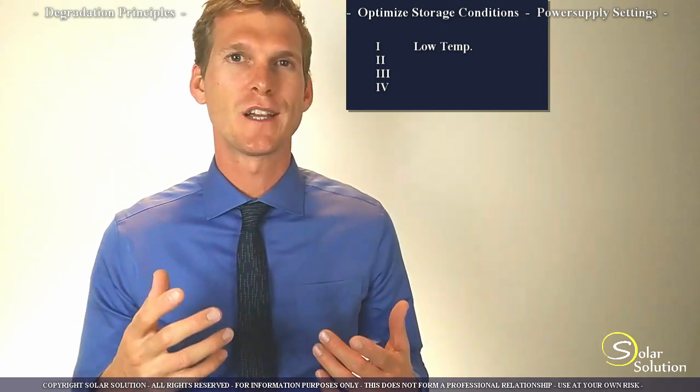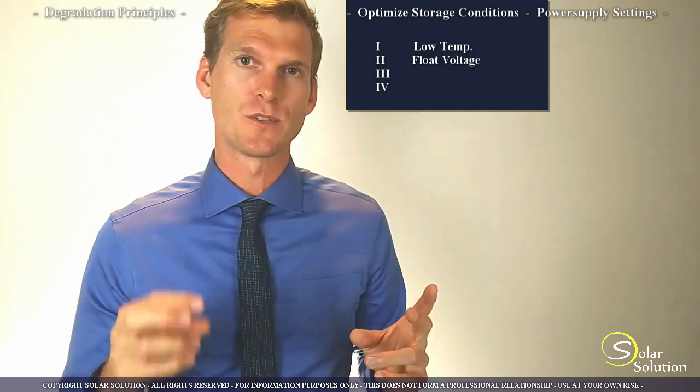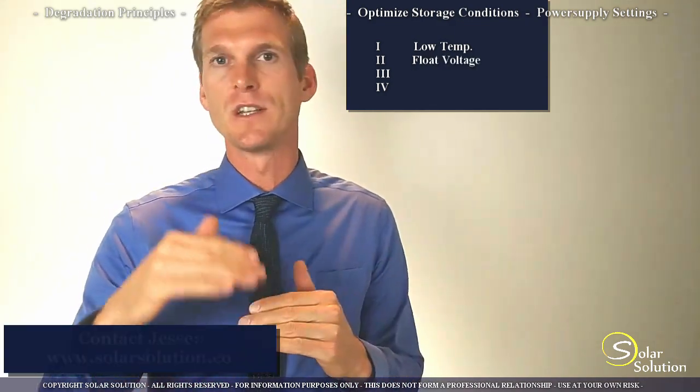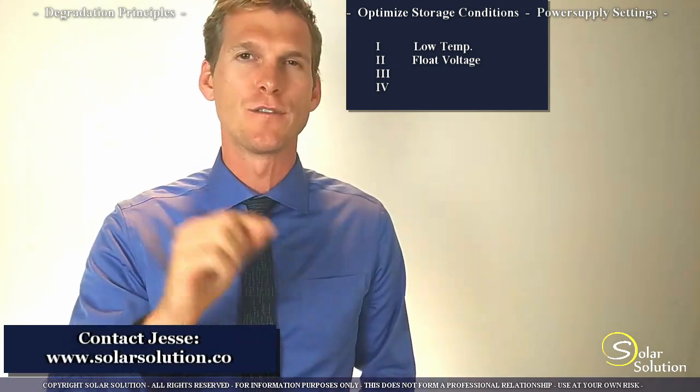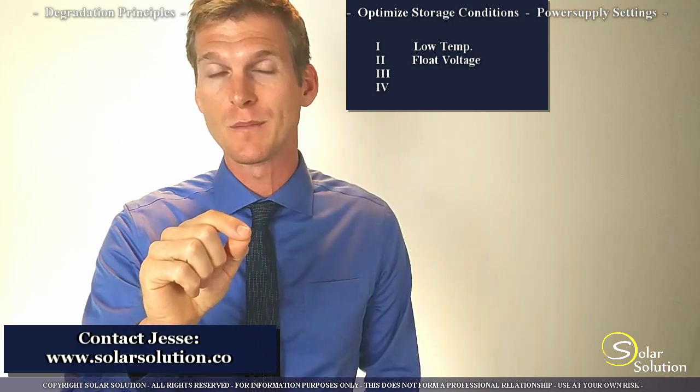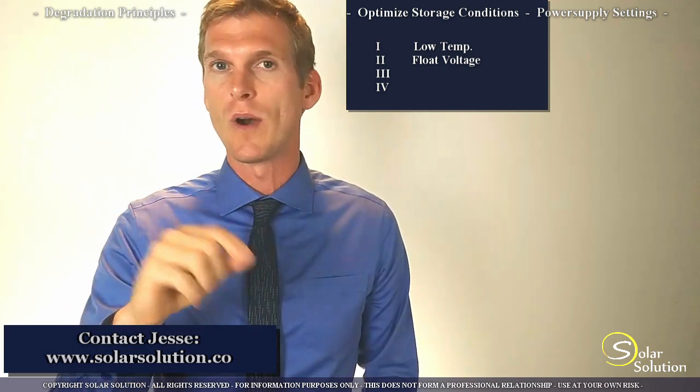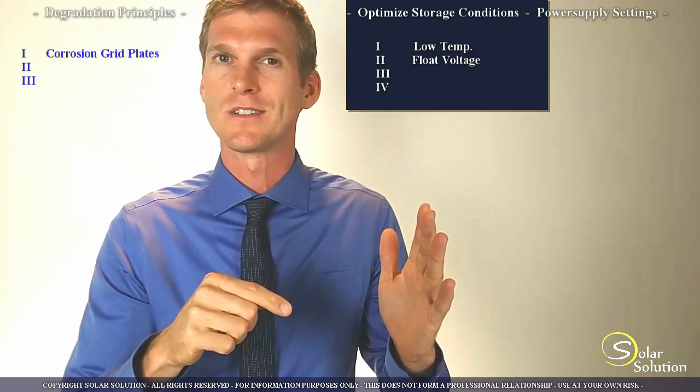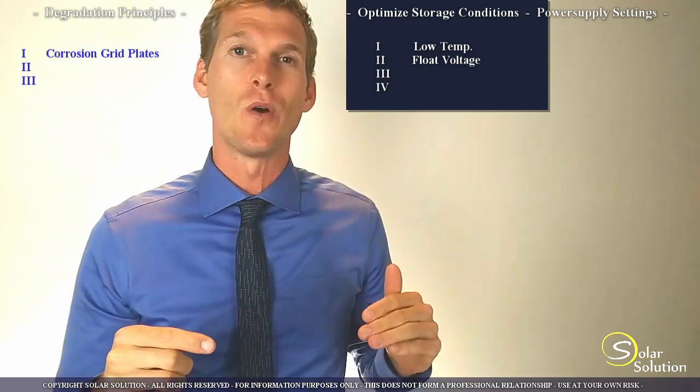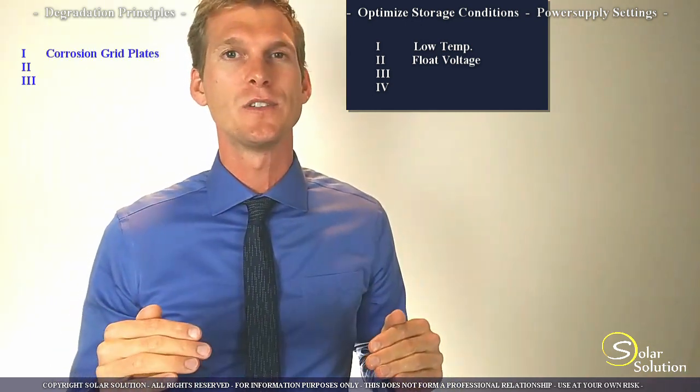Now another very simple but very effective thing you can do is setting the right float voltage for your system. So the float voltage is the voltage at which the battery will be kept if it's 100% charged. So you can find the right value for your specific battery in a specification sheet or ask your supplier. Now if you keep the float voltage too high you will cause excessive corrosion on the positive grid plates. Remember we discussed that before. If you set it too low you're actually undercharging your battery and you can cause excessive sulfation on your battery.